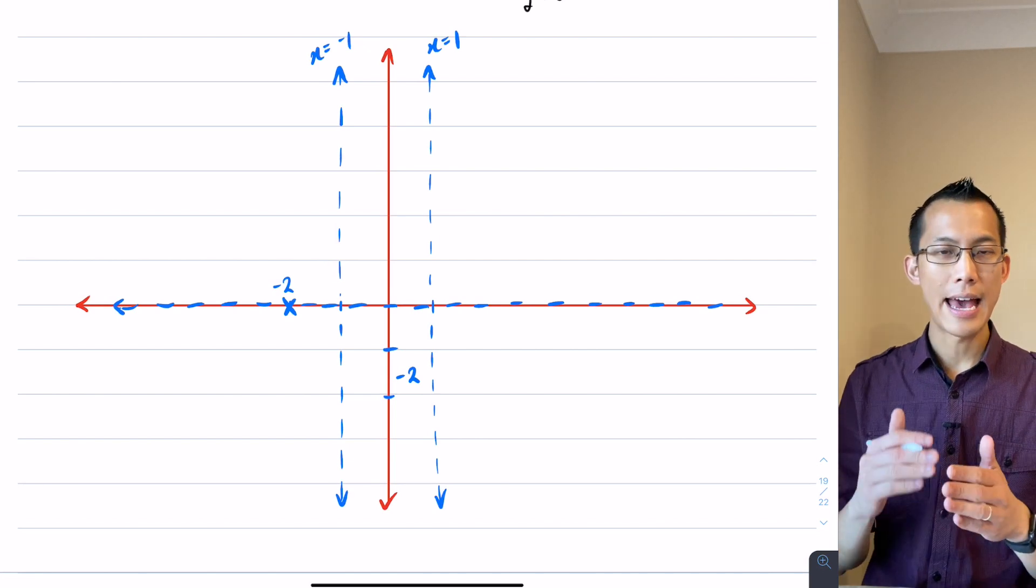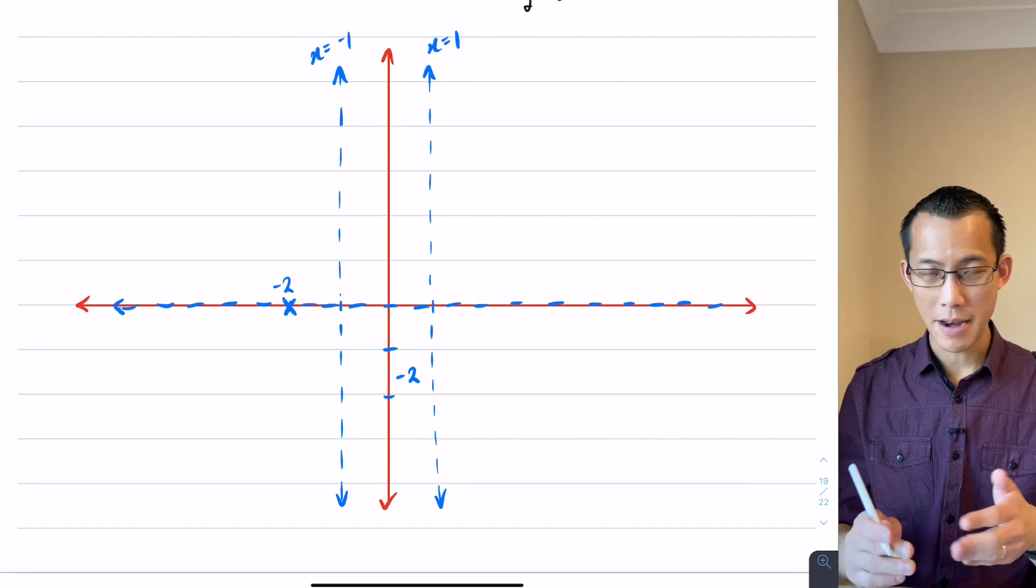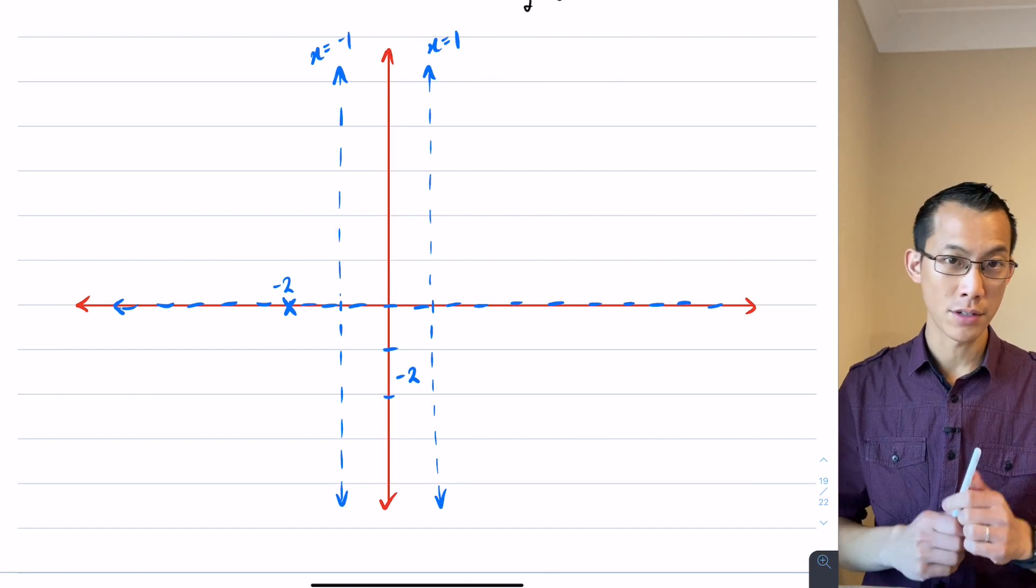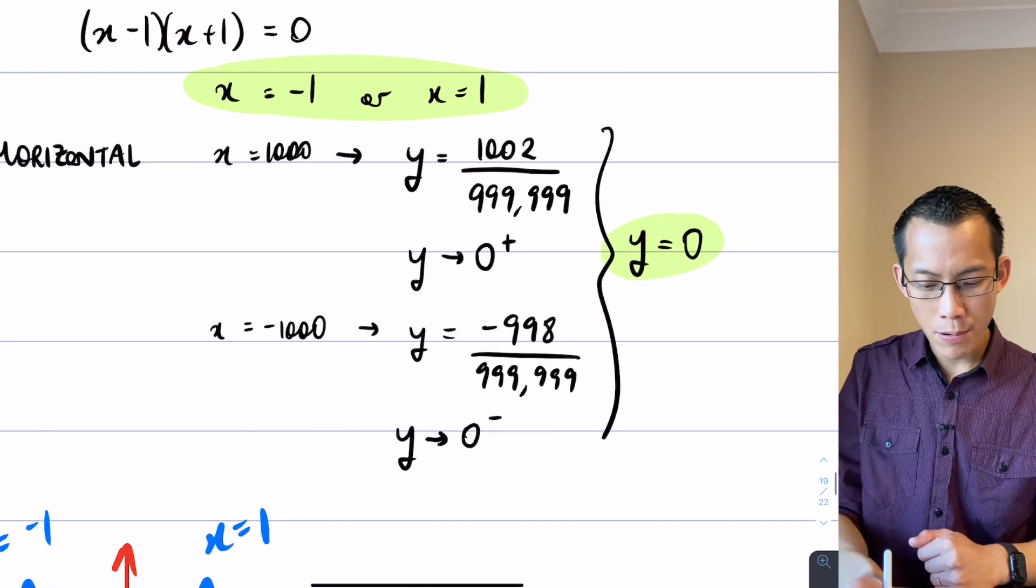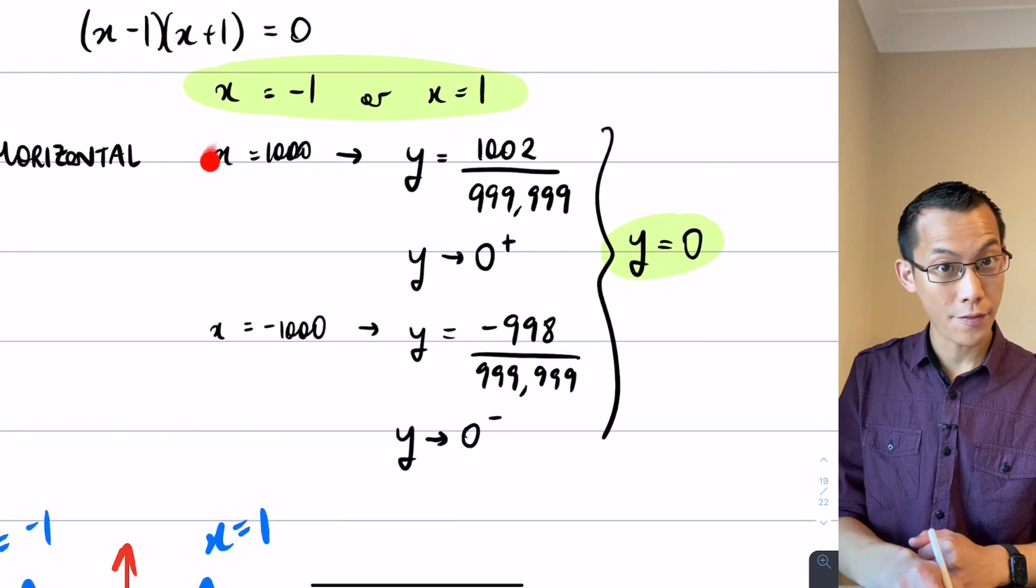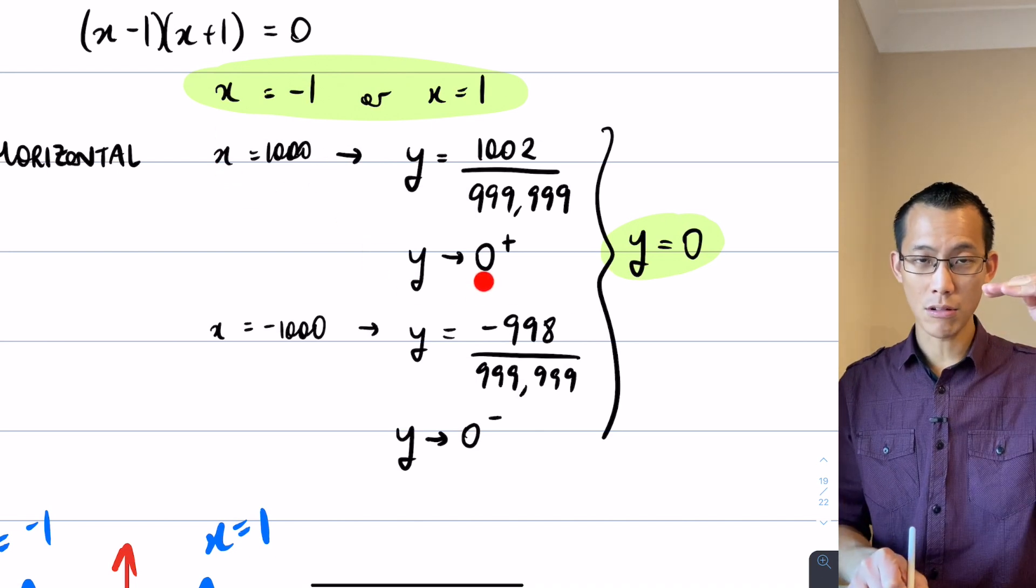What I'm going to do is try to understand as I approach each of the asymptotes which way am I coming from. Now I already know some of this information. For example, with the horizontal asymptote up here, you can see when I approach positive infinity, as I get really large values of x, I know I'm going to approach the horizontal asymptote from above.